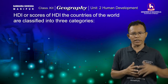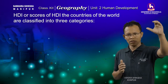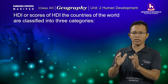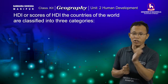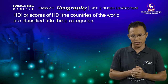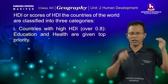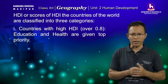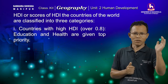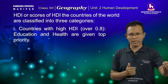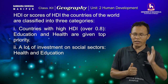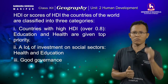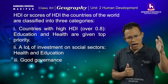There is a great variation between these three groups of countries based on their HDI value, in respect of their economy and social structure. Countries having a high human development index value have an index value ranging between 0.8 and above. In these countries, education and health are a top priority, and there is good governance.